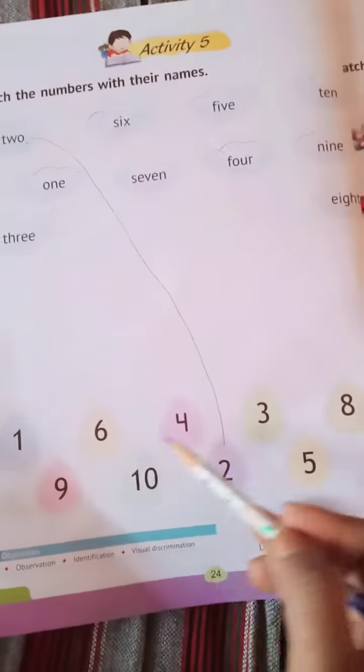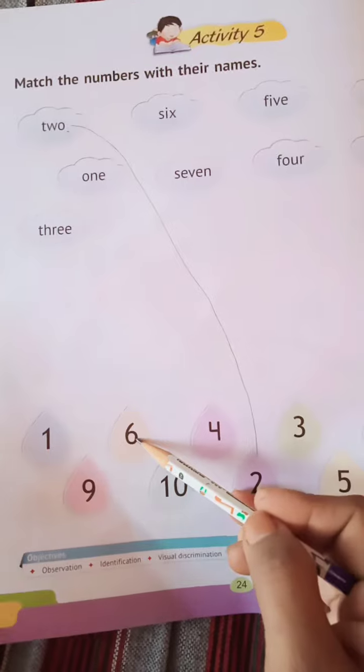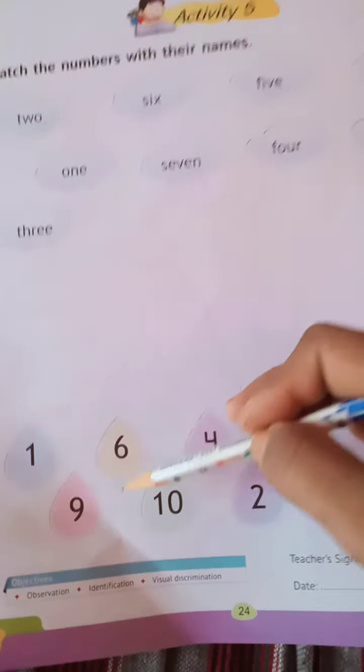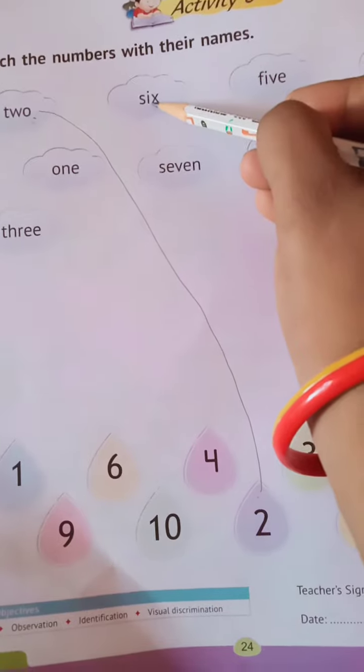Number name 6 with its number. So let's search. Here is number 6. What we have to do? We have to match the number 6 with its name. So how we will match?